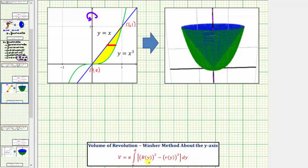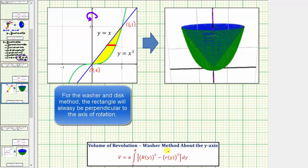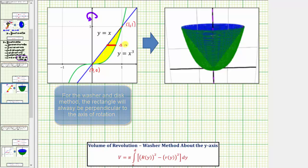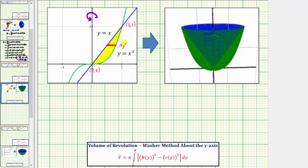To help us set up the integral and find big R(y) and little r(y), it's always helpful to sketch a representative rectangle, shown here in red. If we were to rotate this rectangle about the y-axis, it would give us one washer volume of our solid. Notice how the thickness or width of this rectangle would be delta y, once again indicating we will integrate with respect to y.